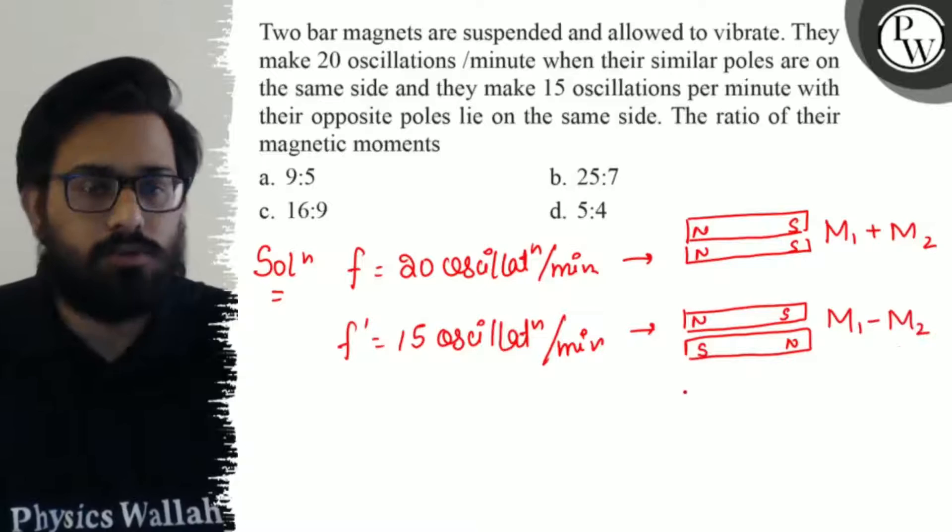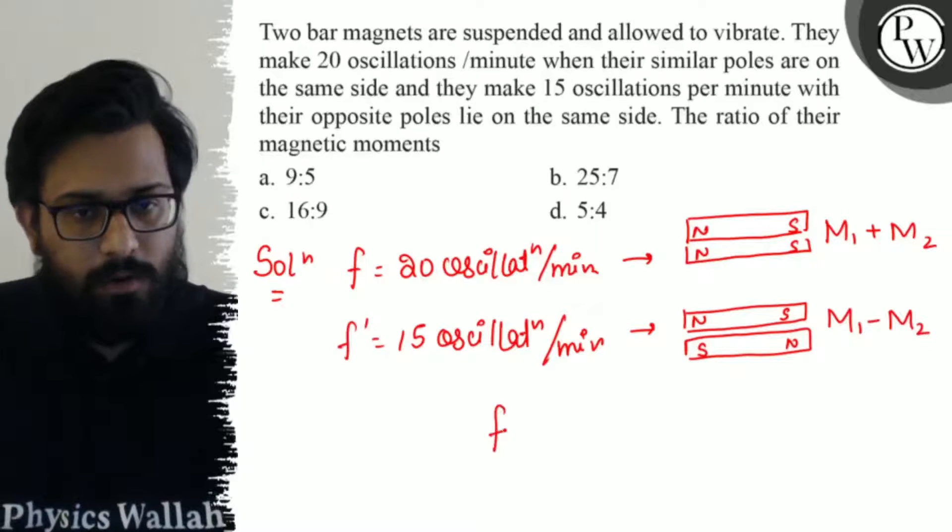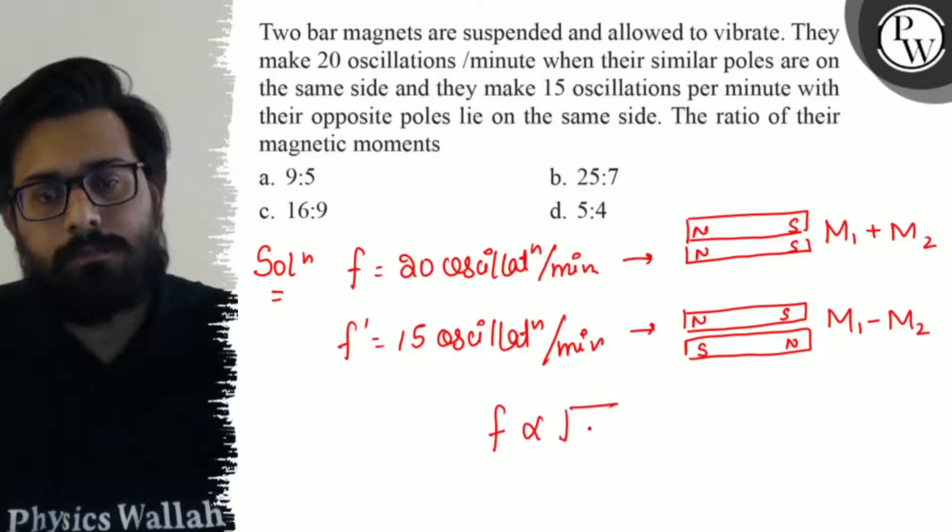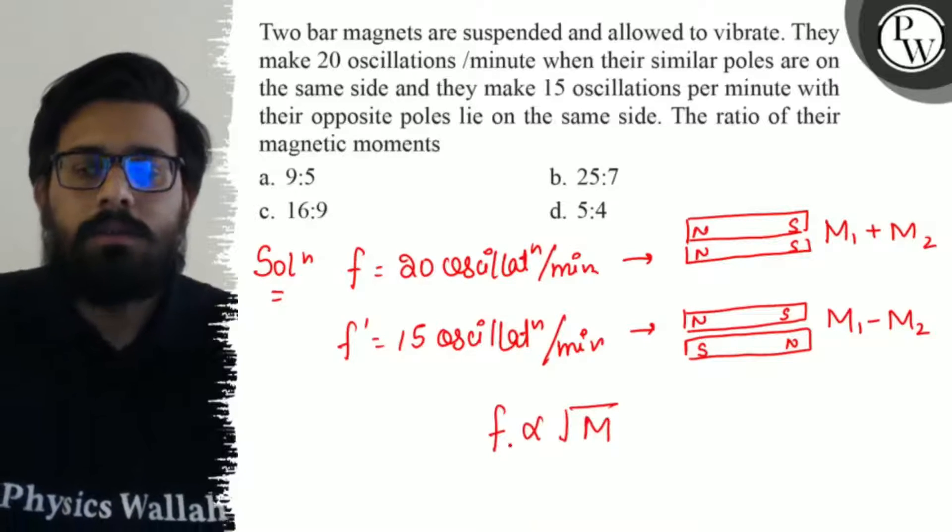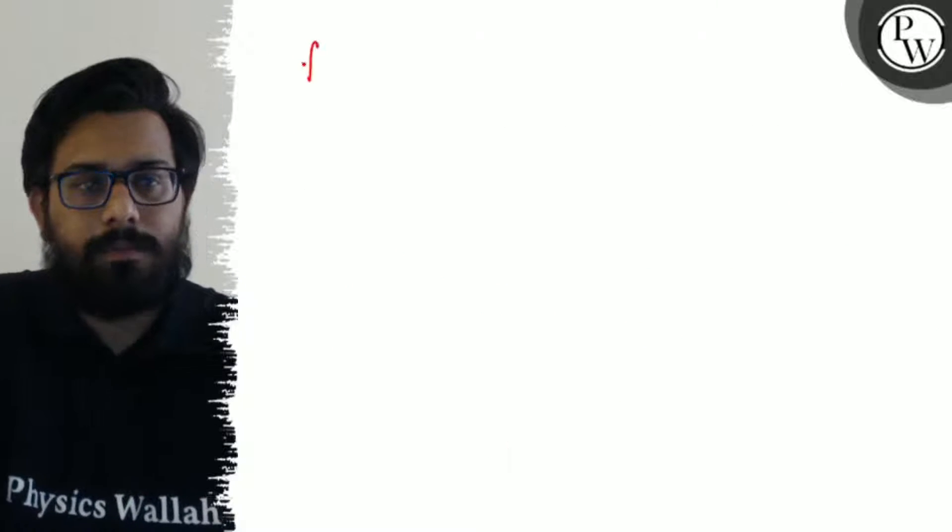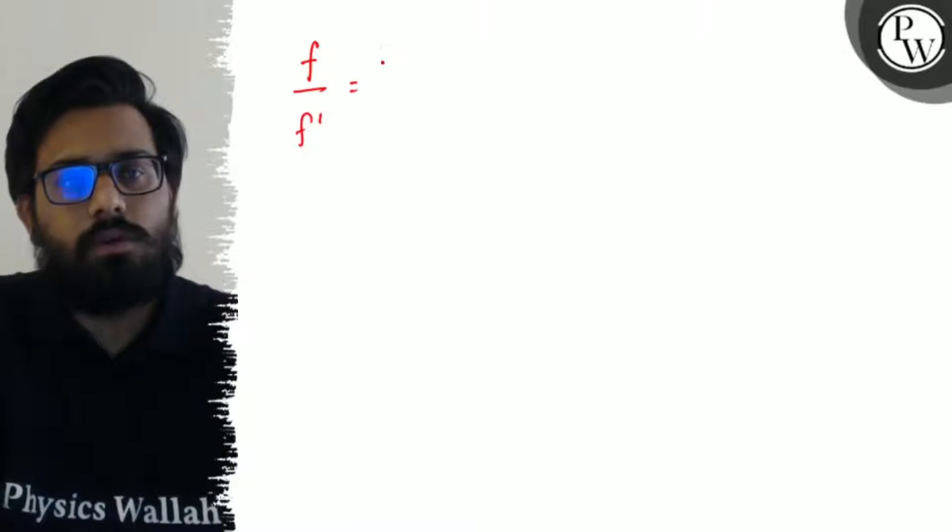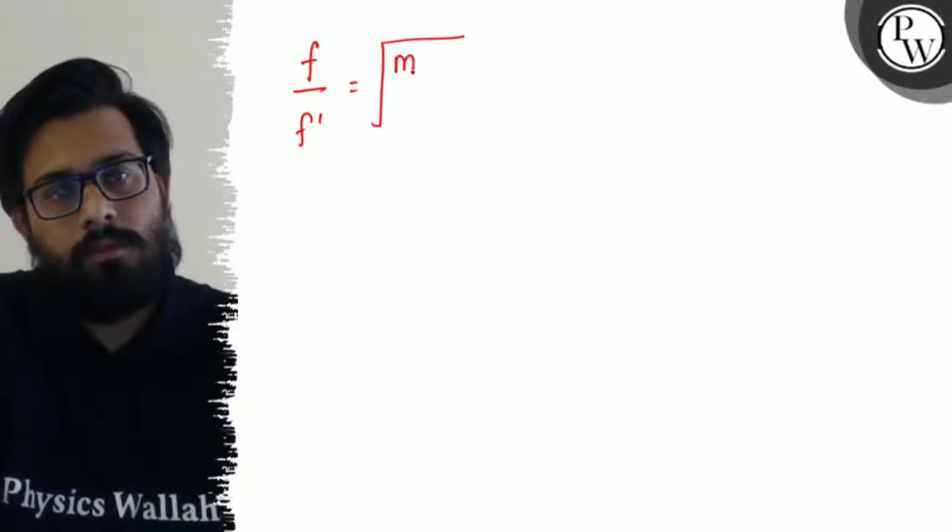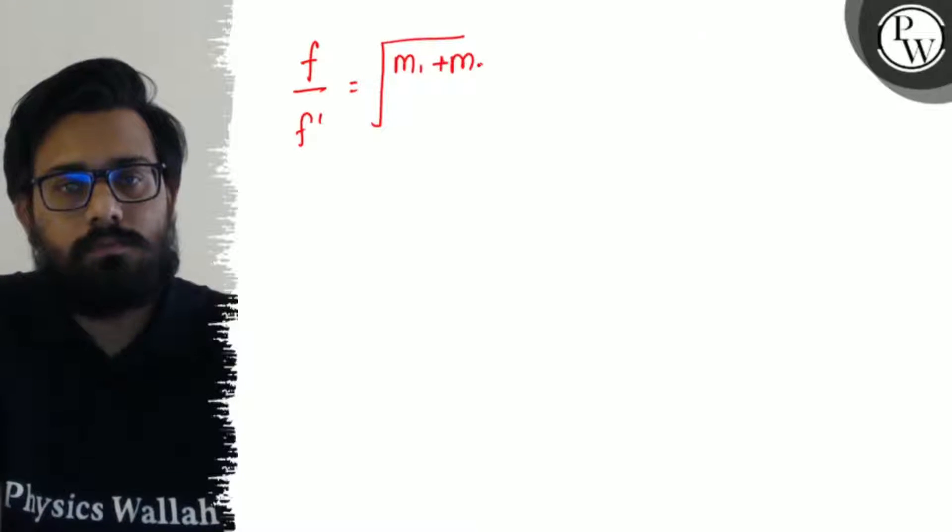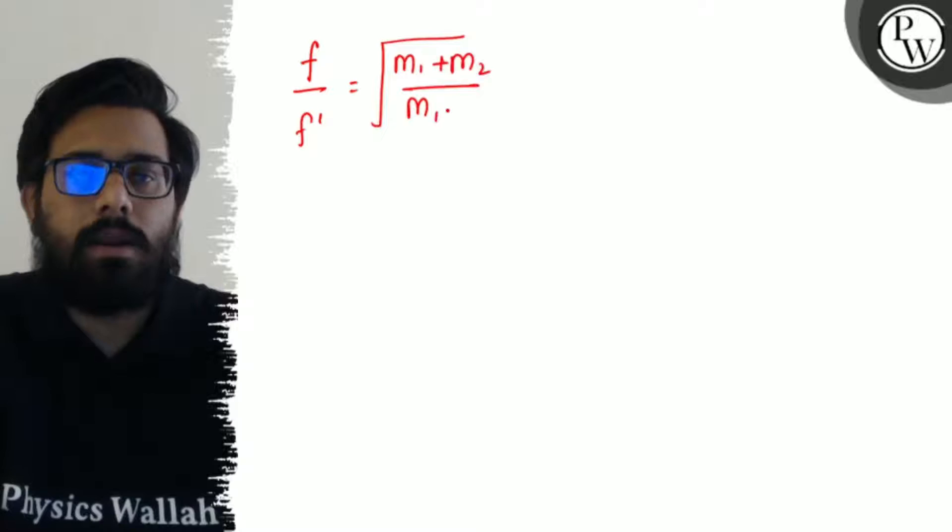And we know that frequency is proportional to under root of M. So f upon f dash can be written as under root of M1 plus M2 upon M1 minus M2.